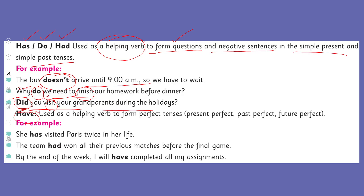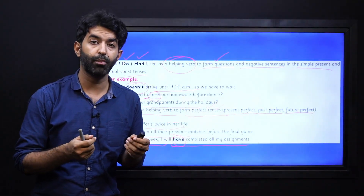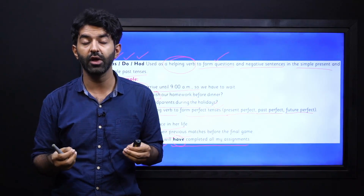Have is used as a helping verb to form perfect tenses — it could be present perfect, past perfect, or future perfect. For example, 'She has visited Paris twice in her life.' 'The team had won all their previous matches before the final game.' 'By the end of the week, I will have completed all my assignments.' So has, had, and have are showing you that these sentences are in the form of perfect tenses — past, present, or future — and these words will be used in perfect tenses of any type.